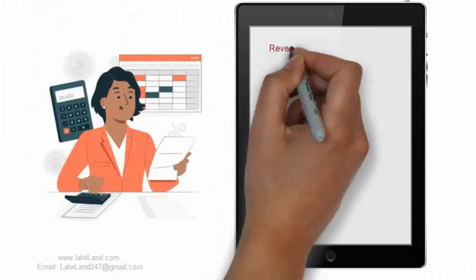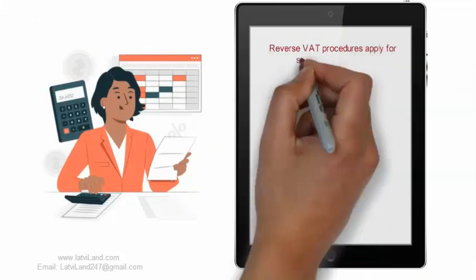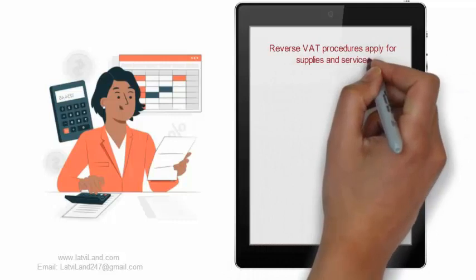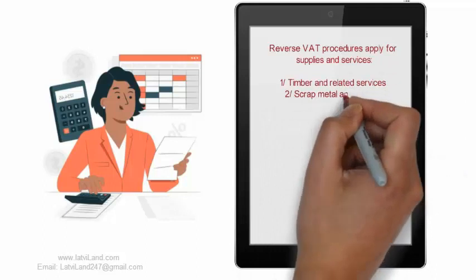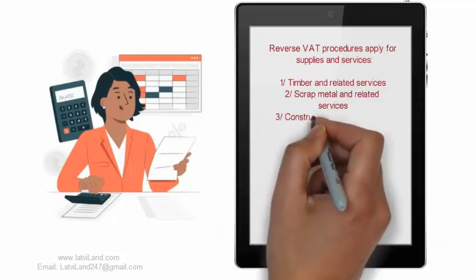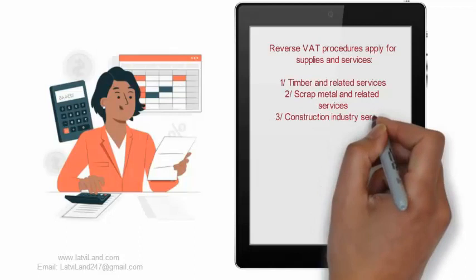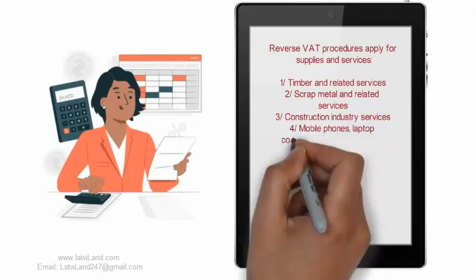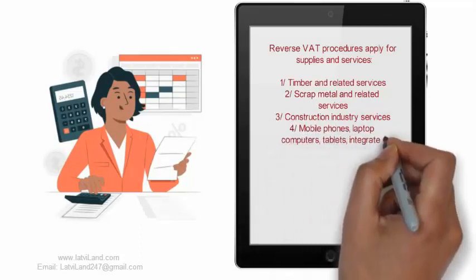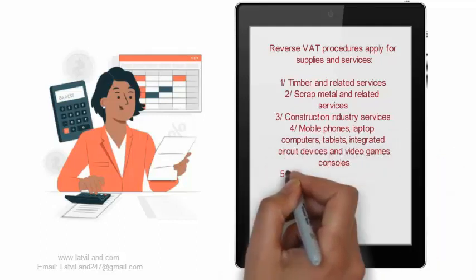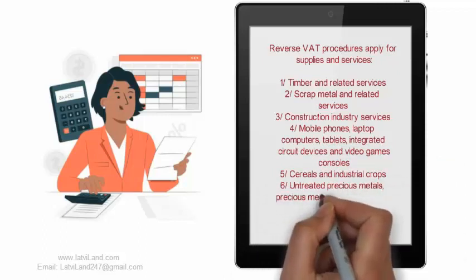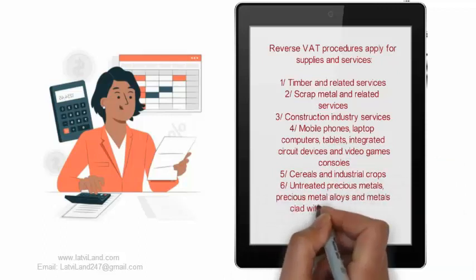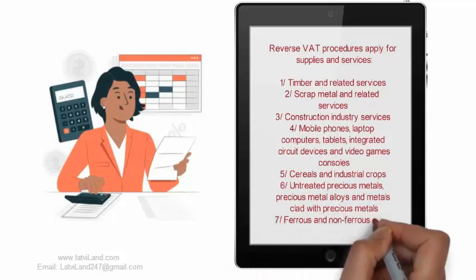5. Reverse VAT Procedures apply for the following supplies and services: 1. Timber and related services. 2. Scrap metal and related services. 3. Construction industry services. 4. Mobile phones, laptop computers, tablets, integrated circuit devices and video game consoles. 5. Cereals and industrial crops. 6. Untreated precious metals, precious metal alloys and metals clad with precious metals.